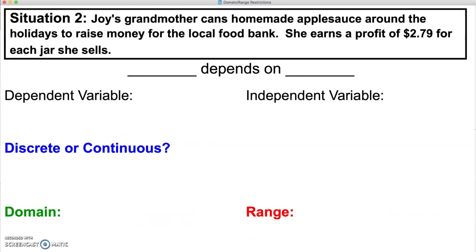Situation number two is going to be an on-your-own problem. Joy's grandmother cans homemade applesauce around the holidays to raise money for the local food bank. She earns a profit of $2.79 for each jar she sells. Write the depends statement and then determine your dependent and independent variables, and write the domain and range and determine if it's discrete or continuous.